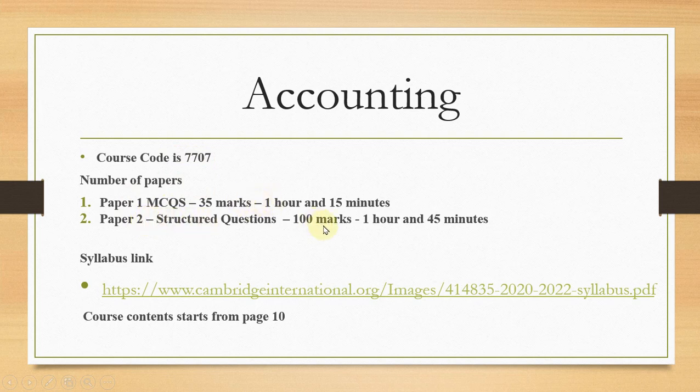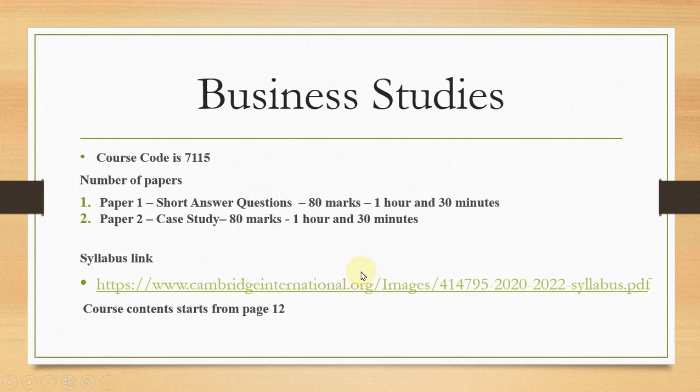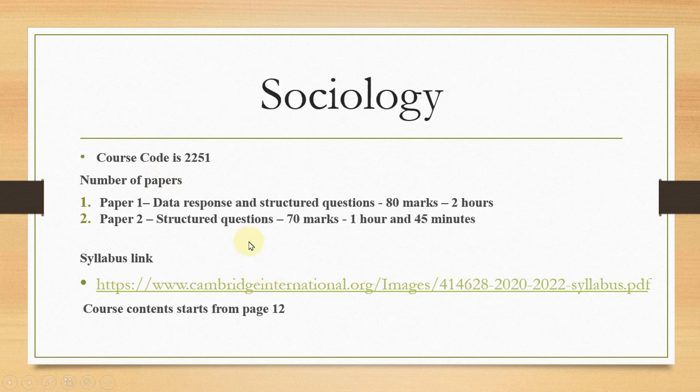Business Studies: Paper 1 is Short Answer Questions, 80 marks, one hour 30 minutes. Paper 2 is Case Study, 80 marks, one hour 30 minutes. There will be some description given which you study, then answer questions. The code is 7115. Sociology: Paper 1 is Data Response and Structured Questions, Paper 2 is Structured Questions, 80 marks and 70 marks. The code is 2251.